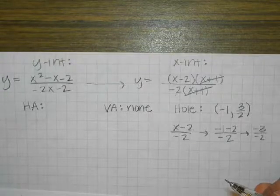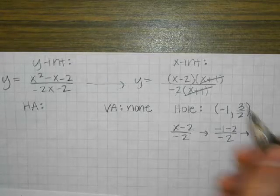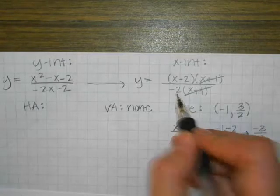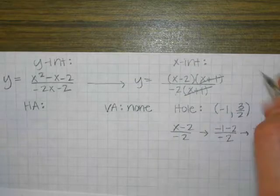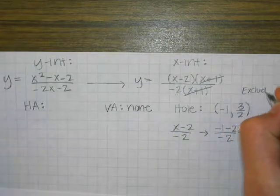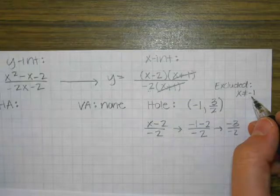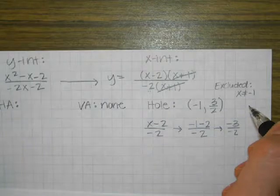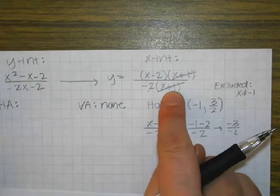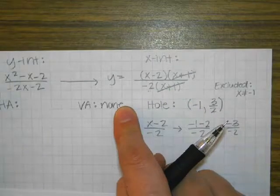How do you understand the difference between 0 and none? So down here, if you were to take the problem and look at what your excluded values were, you would say my excluded values — there's only one — and you would say X cannot equal negative 1. An excluded value can be a hole or a vertical asymptote. So if you looked at this, you'd say there's only one excluded value, and that excluded value happens to be the hole, so there's nothing left over to be a vertical asymptote.